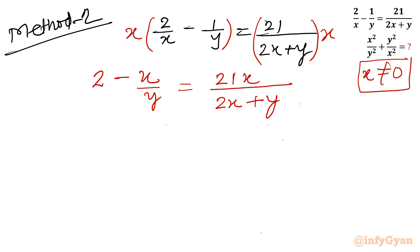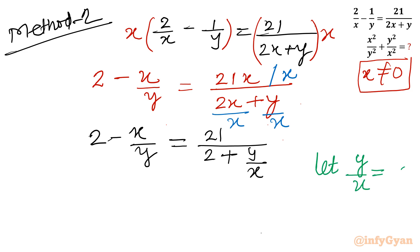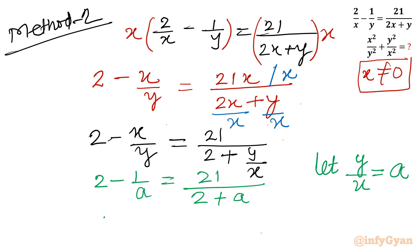Since x is non-zero, I can divide the right-hand side numerator and denominator by x, giving 2 minus x/y equals 21 over (2 plus y/x). Now, let y/x equal a. Then the equation becomes (2a minus 1)/a equals 21/(2 plus a).